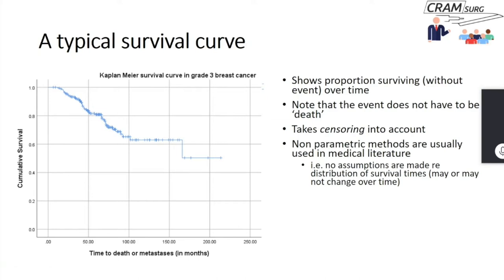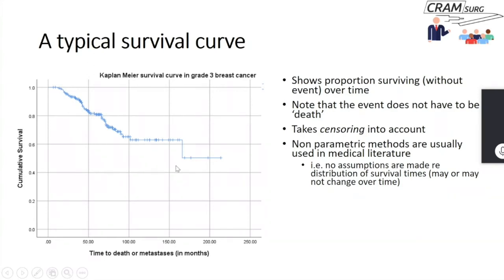Survival data is usually presented using non-parametric methods, because you do not need to make any assumptions about the distribution of survival times. For some diseases, survival in the first few years might be low with many patients dying early, then improving. In others it might be the opposite. Employing non-parametric methods means you don't have to make assumptions about how survival or events are distributed over time.